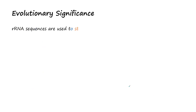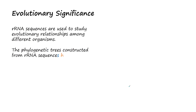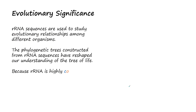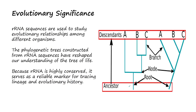Evolutionary significance of ribosomal RNA: ribosomal RNA sequences are used to study evolutionary relationships among different organisms. You can use ribosomal RNA of different organisms, such as fish and humans, to test their genetic lineage and common descent. Phylogenetic trees constructed from ribosomal sequences have reshaped our understanding of the tree of life.